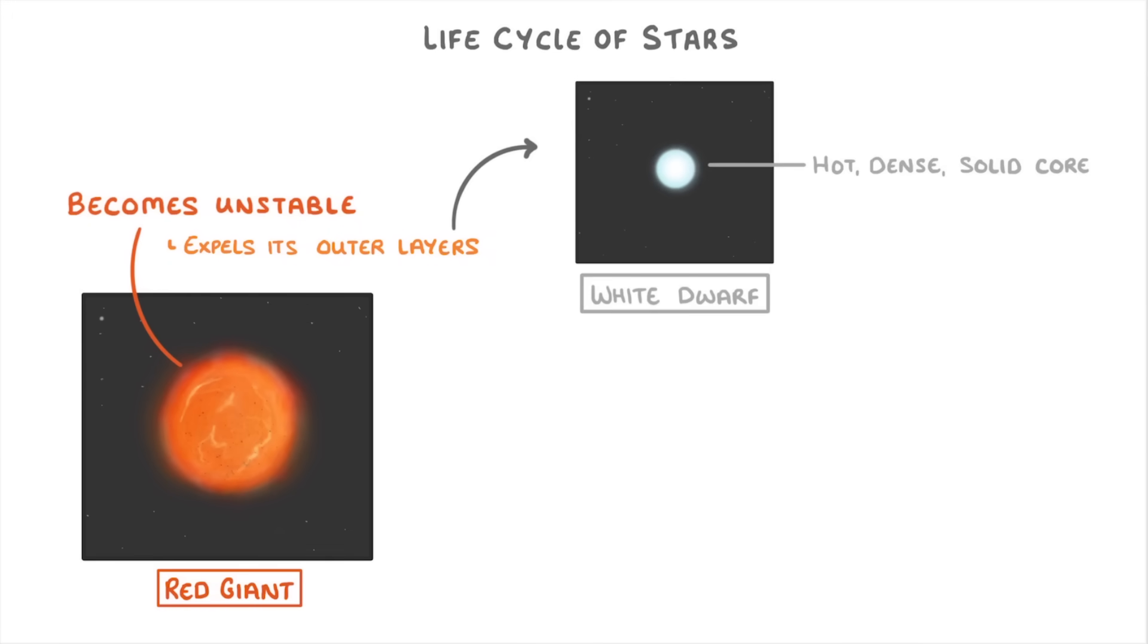We call this a white dwarf, because it gives off lots of light, so it appears white, and it's relatively small.